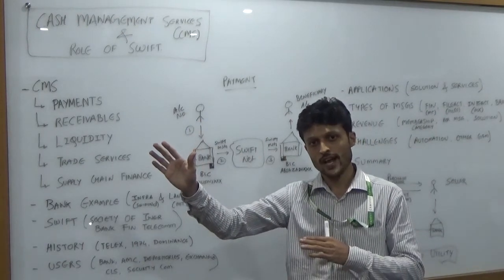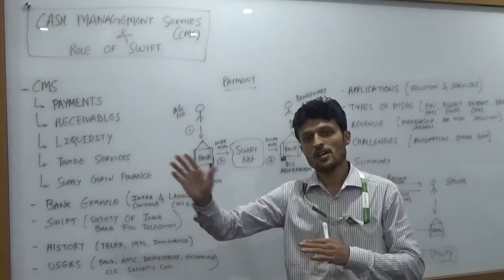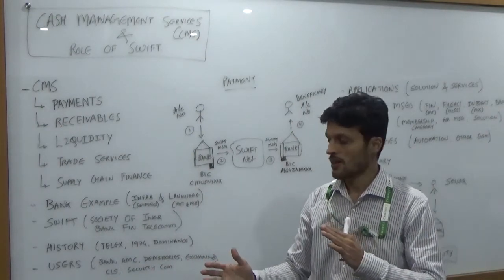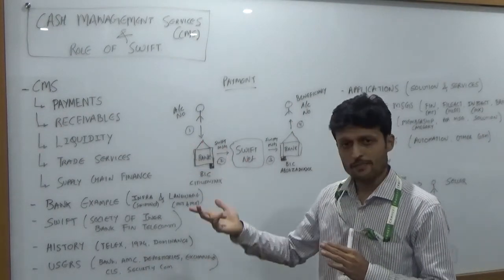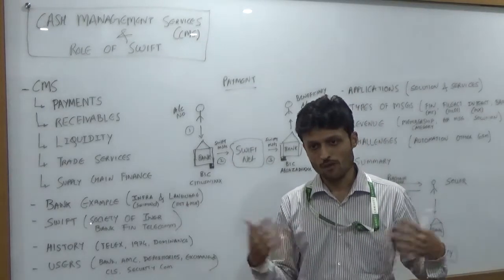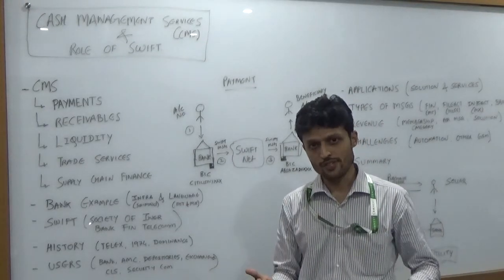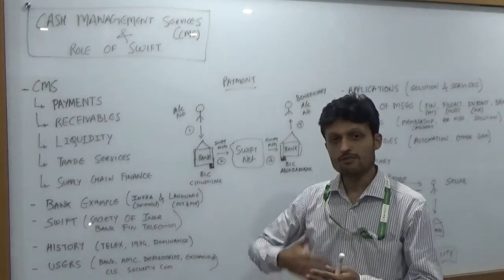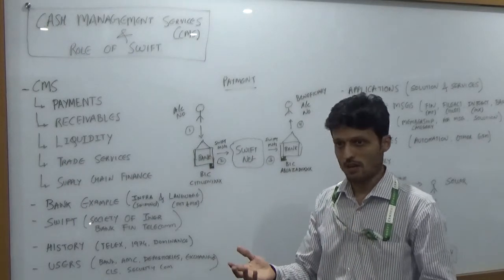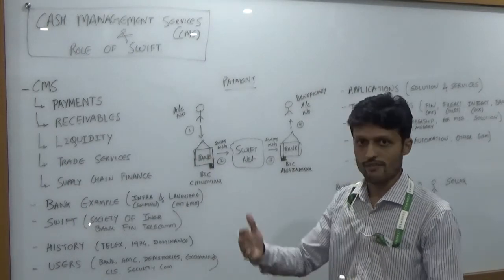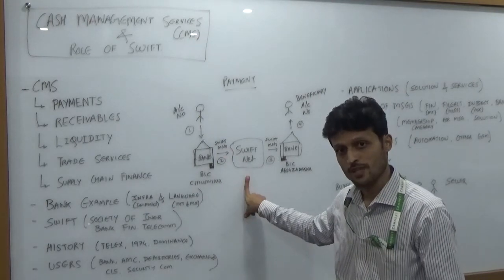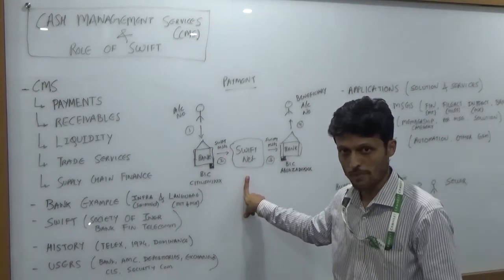For example, if 3 lakh employees are working in Reliance Industries, they have to make 3 lakh salary payments at end of the month. There can also be utility payments for leased corporate office environments, or dividend rollouts to shareholders at certain intervals. These are the bulk payments they deal with, and SWIFTNet also helps in doing these bulk payments.